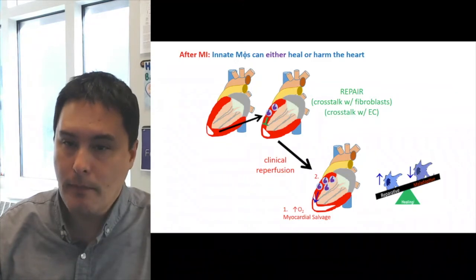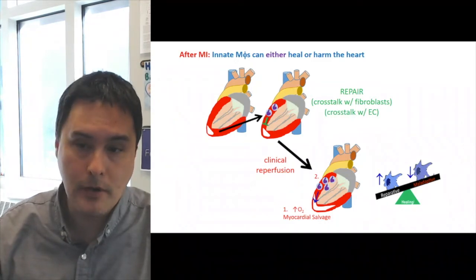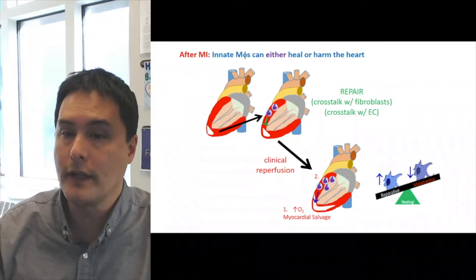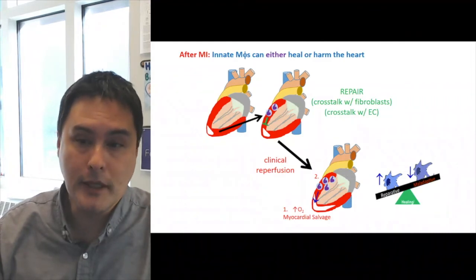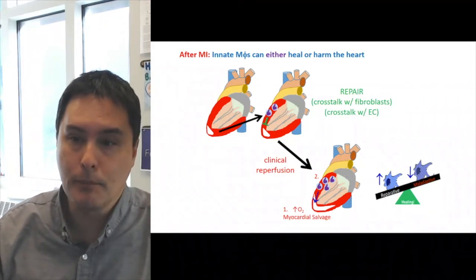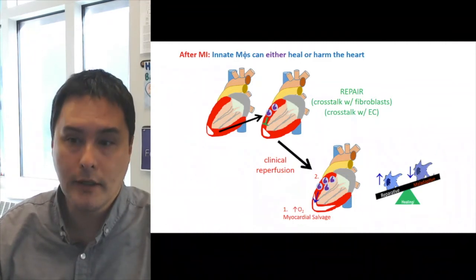After MI, innate immune cells called macrophages can either heal or harm the heart. For example, after initial cardiac injury, this leads to an accumulation of cardiac macrophages that can promote repair through crosstalk with other cardiac cells including fibroblasts and endothelial cells.